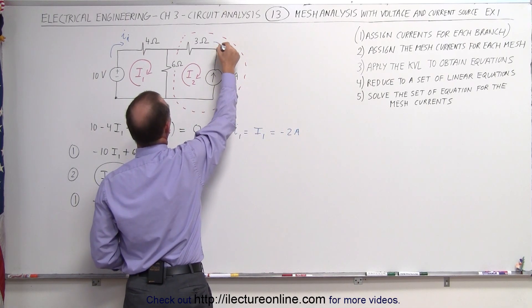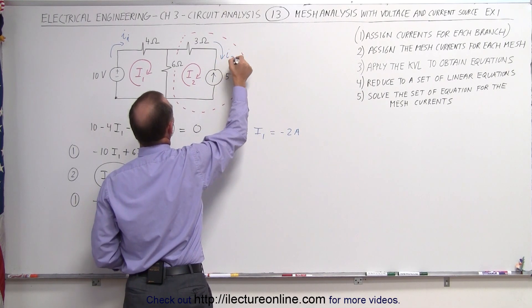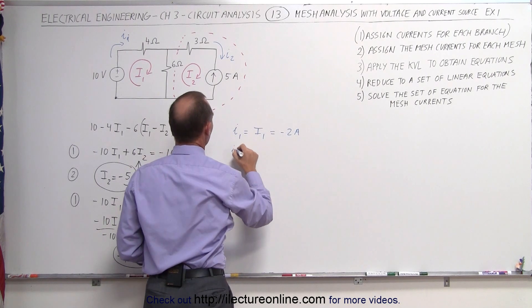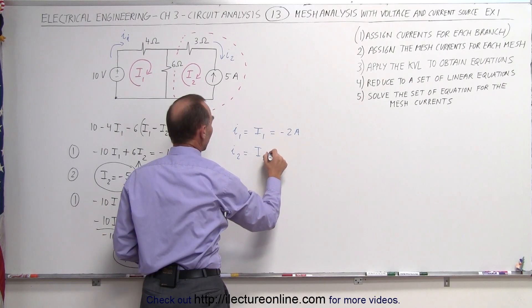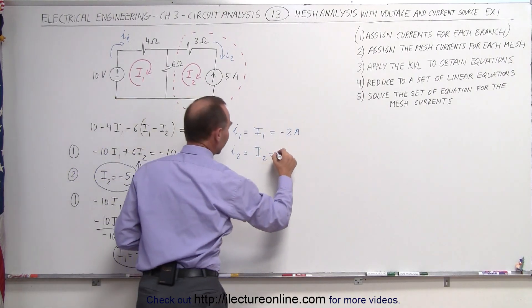We can now have our second current right here, let's call this I2. I2 is equal to the same direction as mesh current I2, which we found to be minus 5 amps.